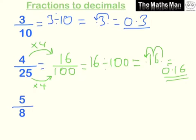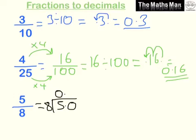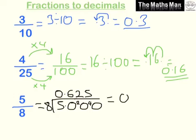If we have a fraction over 10 or 100, it's easy to convert. But for 5 over 8, we can't convert the bottom to 10 or 100, so we do the division: 5 divided by 8. 8 doesn't go into 5, so we add a decimal. 8 goes into 50 six times (48, remainder 2). 8 goes into 20 twice (16, remainder 4). 8 goes into 40 exactly five times. So we get 0.625.